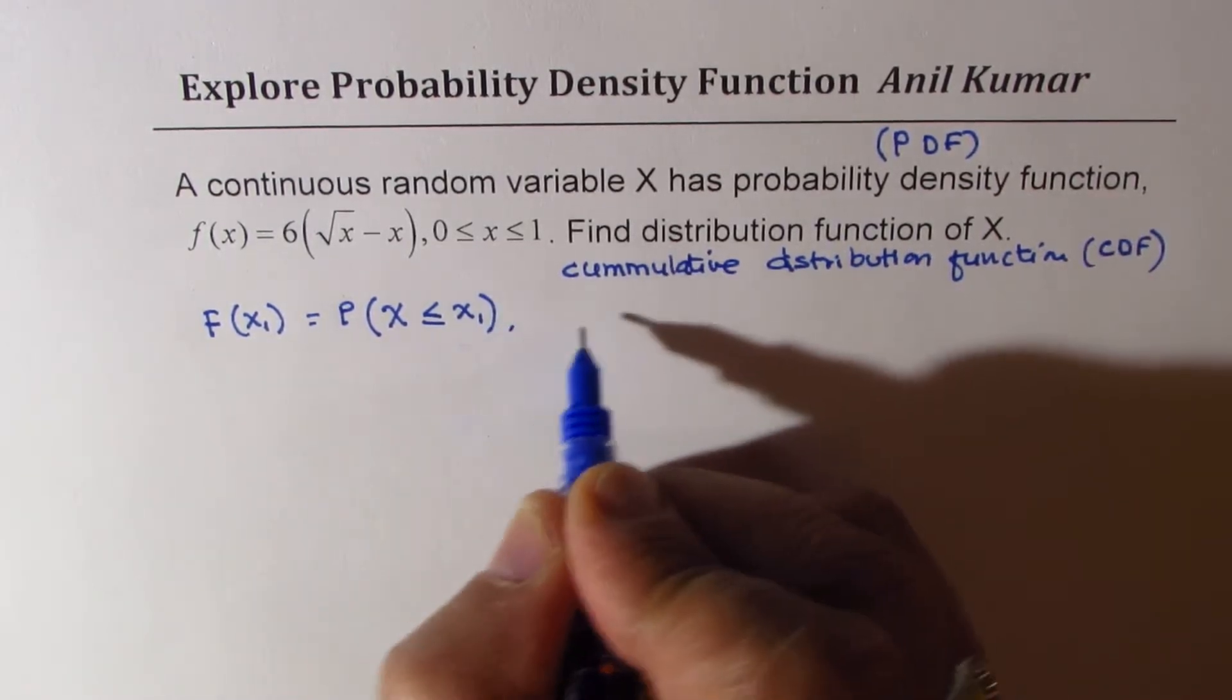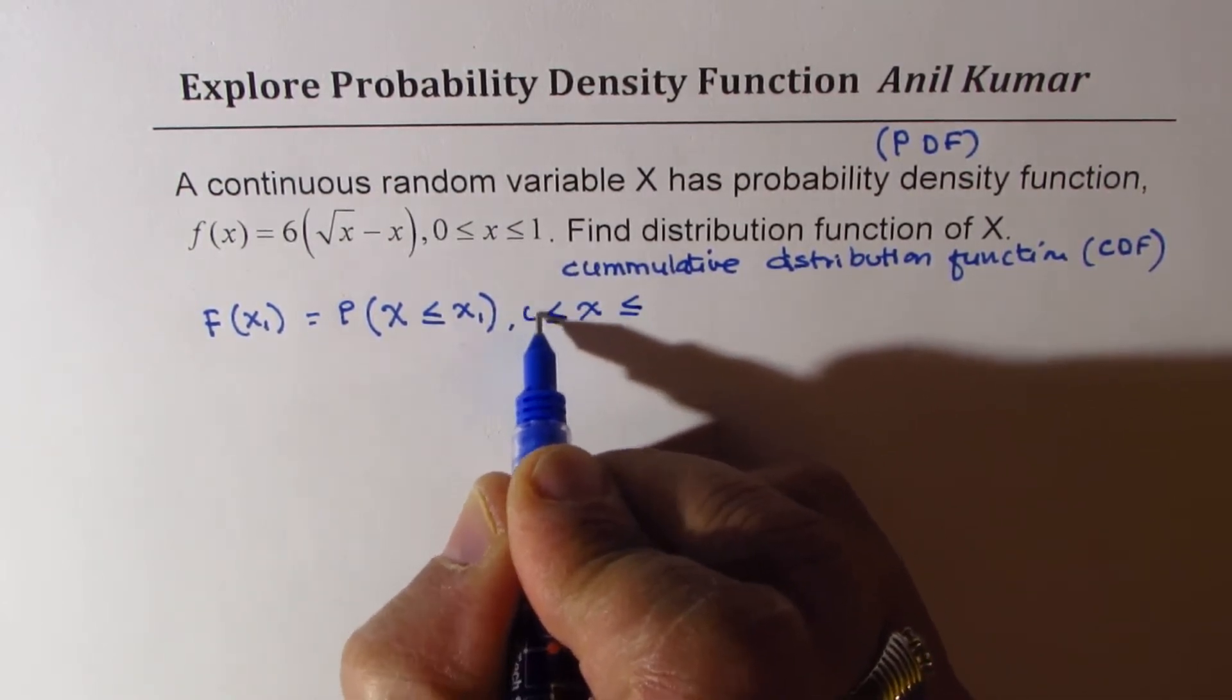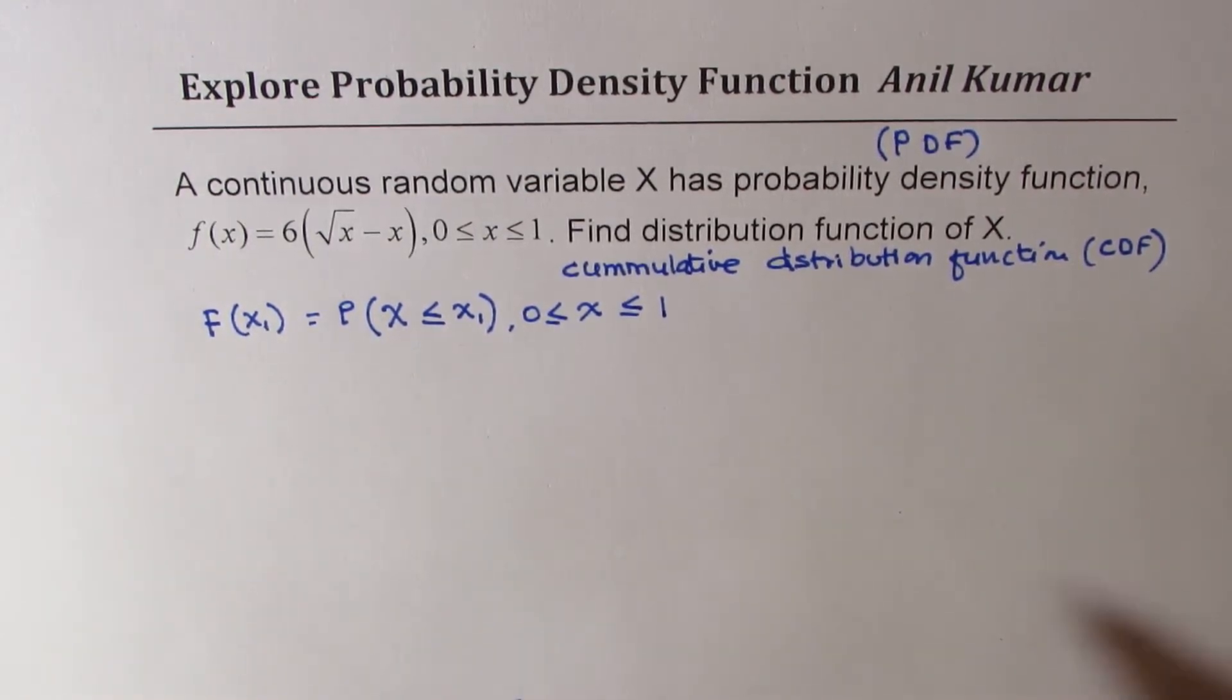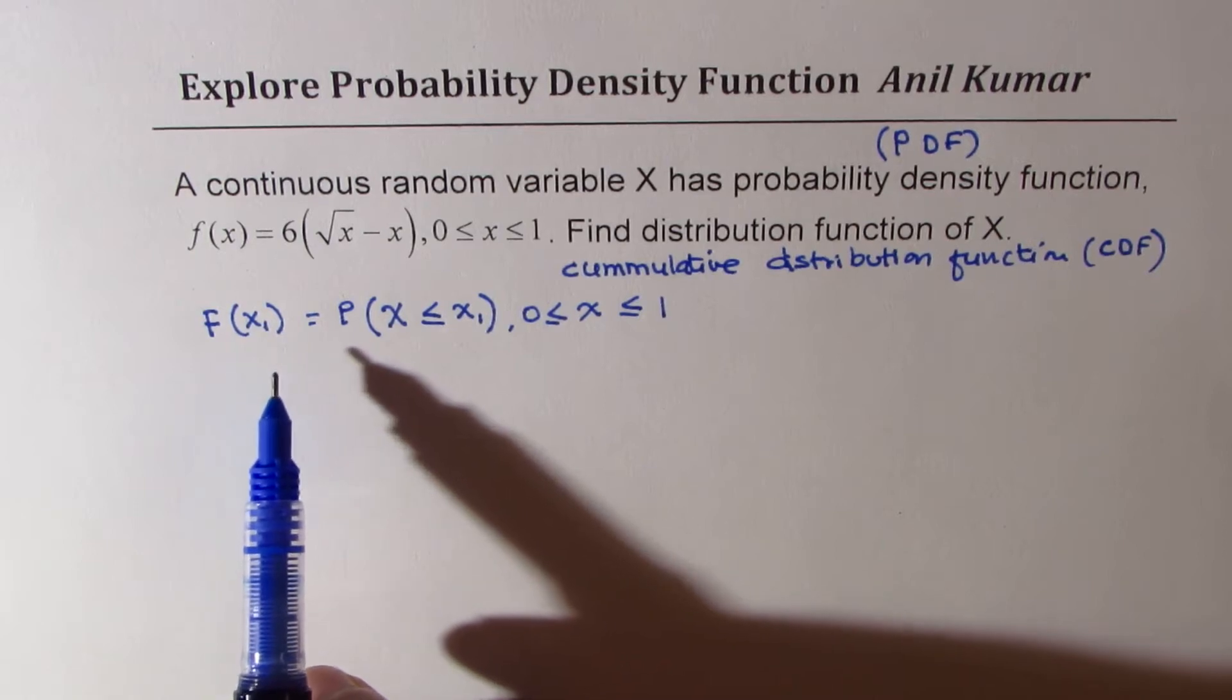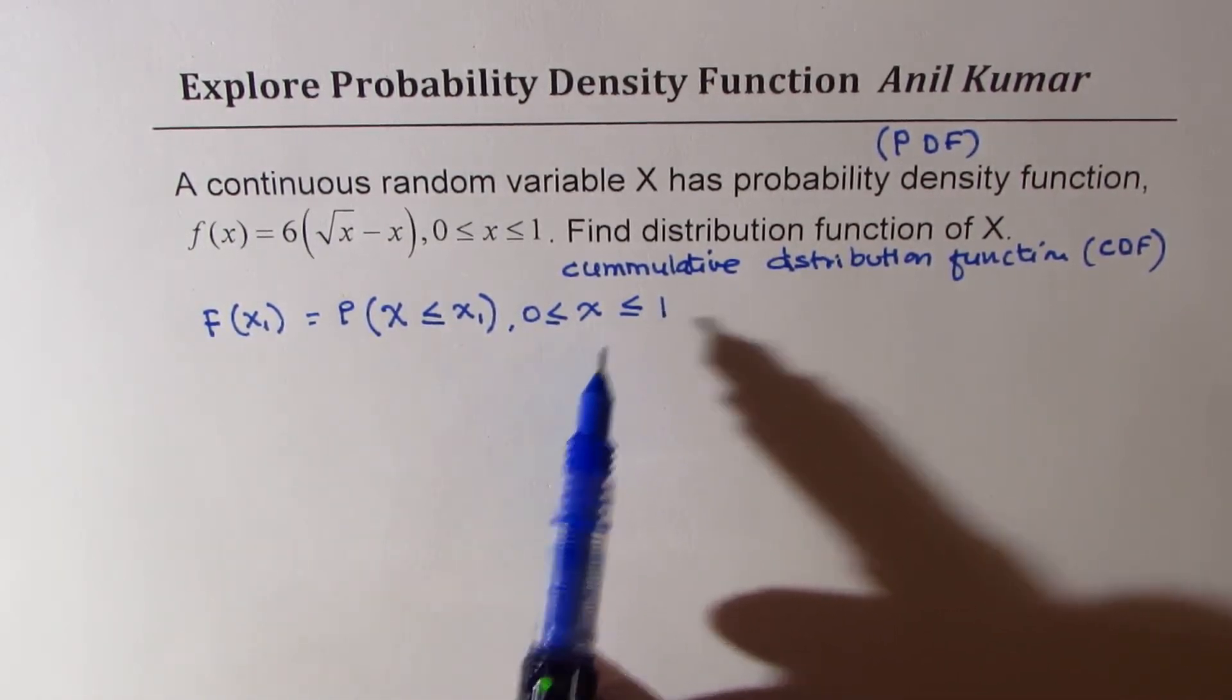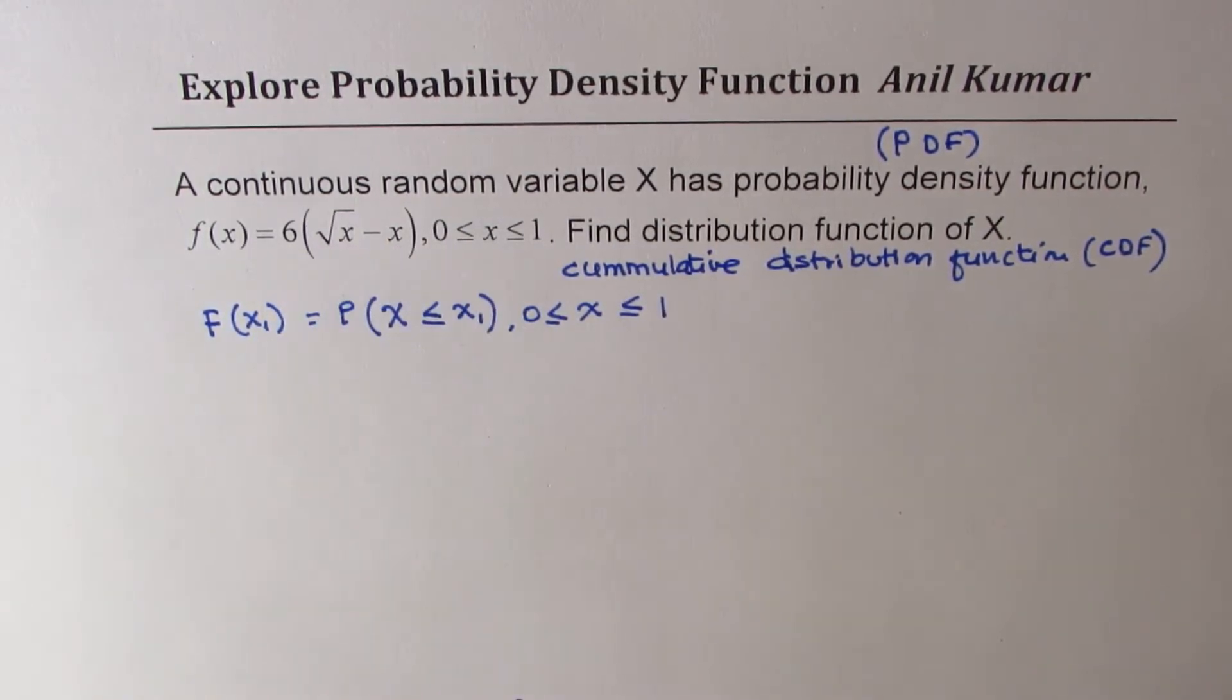Now, we are given the interval where the value of x is between 0 to 1. So from negative infinity to 0, and for greater than 1, it is going to be 0. So let's figure out what is going to be the distribution function in the given interval for the probability distribution function 6 times square root of x minus x.